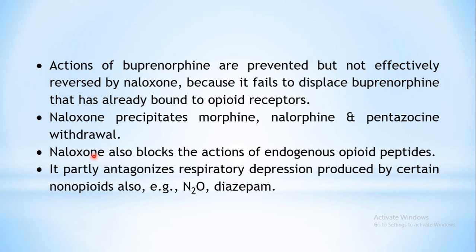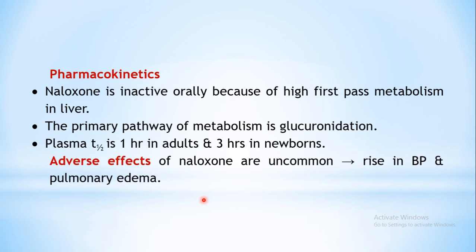Apart from that, naloxone can also antagonize the respiratory depression produced by certain non-opioids like nitrous oxide or diazepam. These drugs do not interact with any opioid receptor, but still this drug can effectively reverse the respiratory depression they produce.